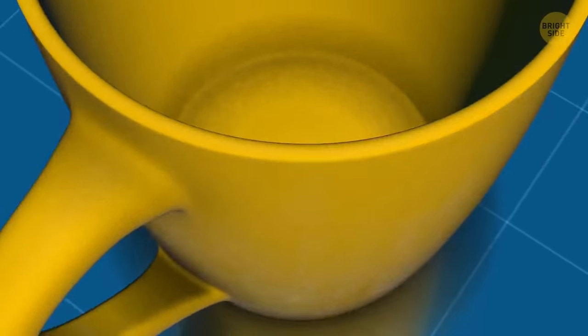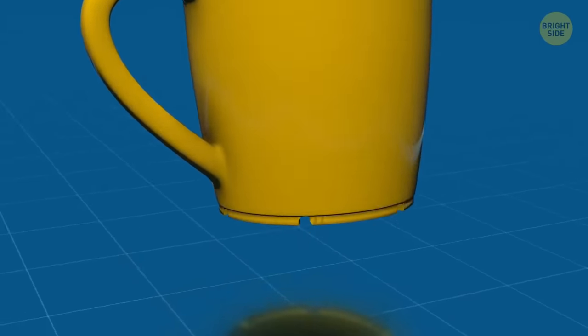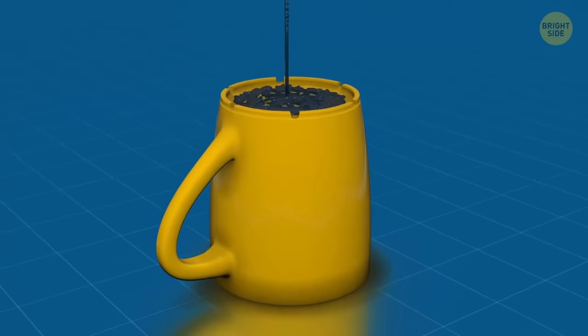Small dimples on the bottom of some cups keep them in place on wet surfaces, and it doesn't let the excess water accumulate while it's in a dishwasher.